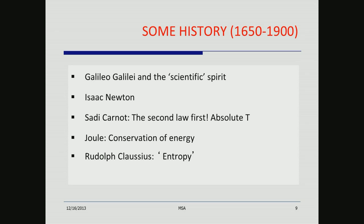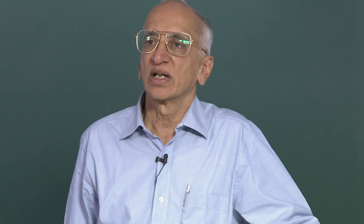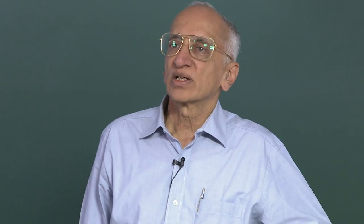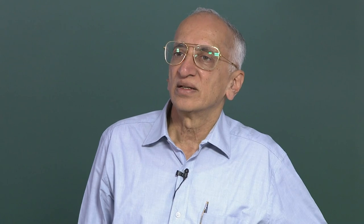Galileo Galilei must be recognized as the person who introduced the scientific spirit. He said you not only have to collect data, you have to use your right brain to arrive at far-reaching conclusions, and then when you hypothesize, you have to also verify experimentally — because a lot of your imagination is often wrong. Of course Galileo did not talk about the right brain and left brain, but in our context we can explain what he said in these terms.